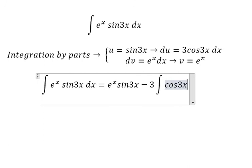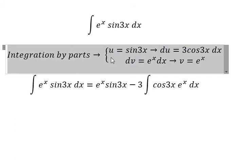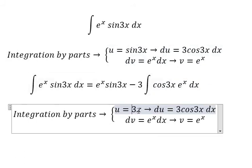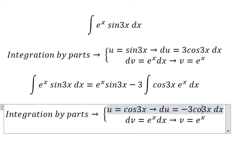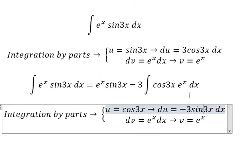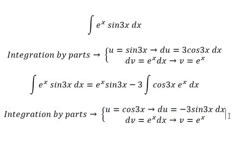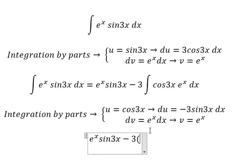Next we do the same technique. Now we change for cos3x, so we have u equals cos3x, du equals negative 3sin3x dx. We have u multiply with v, that's e to the power of x cos3x.